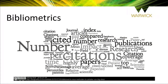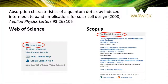Bibliometrics refers to a set of primarily quantitative methods used to measure, track and analyse scholarly literature. Bibliometrics can be both the methods used to analyse scholarly literature — such as citation analysis, impact factors and the H-index — as well as the field of research concerning the application of these methods. The basis of most bibliometrics is the citation.